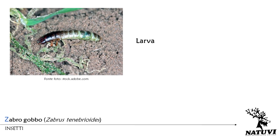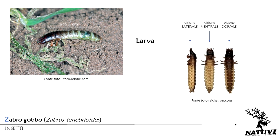Le larve, che a maturità raggiungono i 3 cm di lunghezza, presentano il corpo di forma allungata e appiattita di colore giallognolo. Ciascun segmento del loro corpo risulta sclerificato.